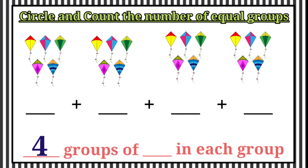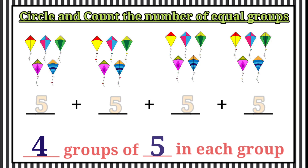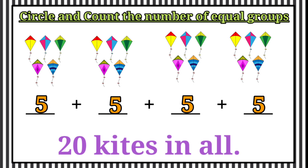Then we are going to count how many in each group. 1, 2, 3, 4, 5. Here 5 in each group. So, therefore the answer is 20 kites in all.